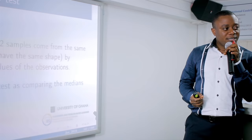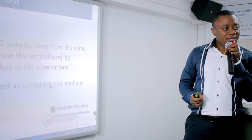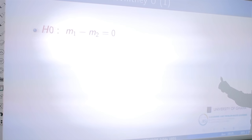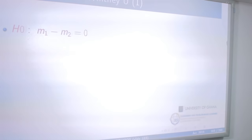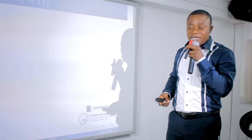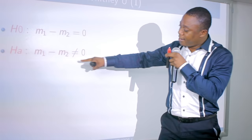Some people interpret this test as comparing medians between two populations. For the hypothesis, I'm using medians — denoted M — so the null hypothesis is M1 minus M2 equals zero, meaning the medians are the same, or there is no difference. The alternative indicates that M1 is not equal to M2, meaning there is a clear difference between the two.